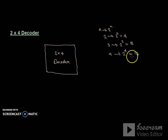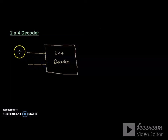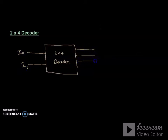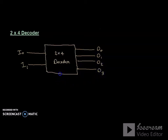Now let's look at the 2x4 decoder in detail. There are 2 inputs: i0 and i1. There are 4 outputs: o0, o1, o2, and o3, and there is one enable line.